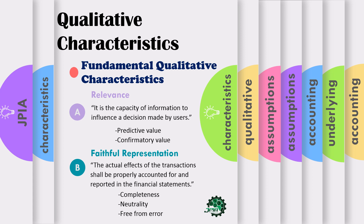For the other component of fundamental characteristic, we have faithful representation. When we say faithful representation, the information presented must reflect what truly happened — it must present what it purports to represent. Under this, there are three components. First is completeness — the information provided must be complete so that users can better understand it. Second is neutrality — the information must not be biased or favor any party; it cannot be revised just to make it more favorable for one side. Third is free from error — the information we provide must be accurate; in short, there should be no mistakes.